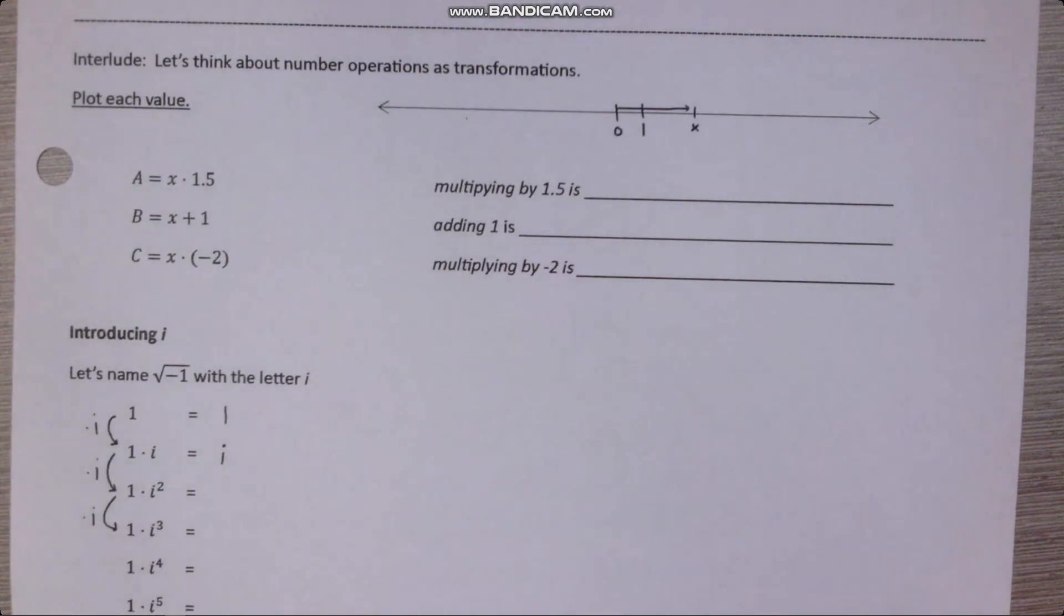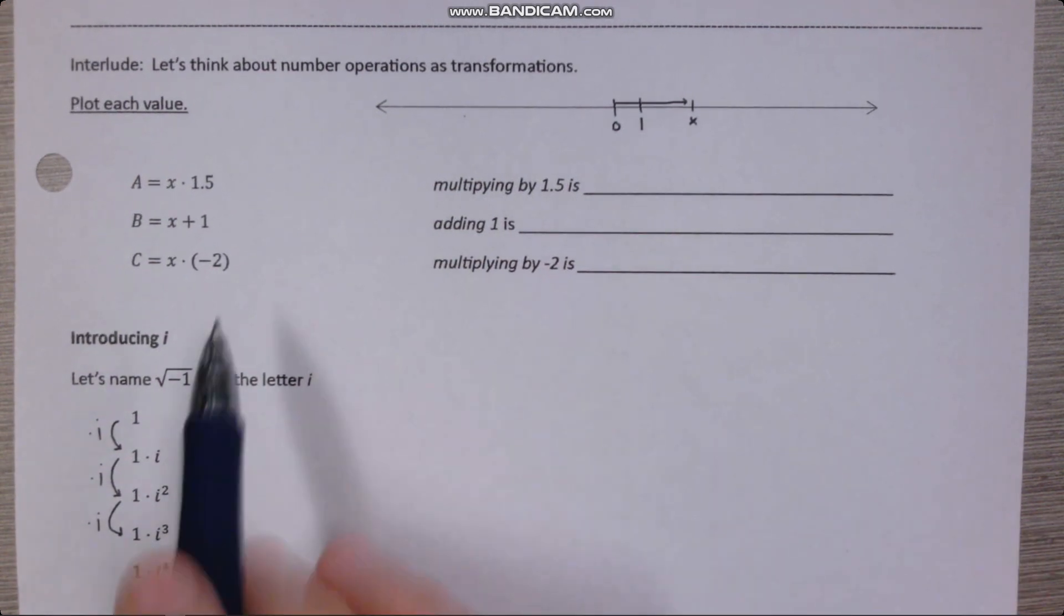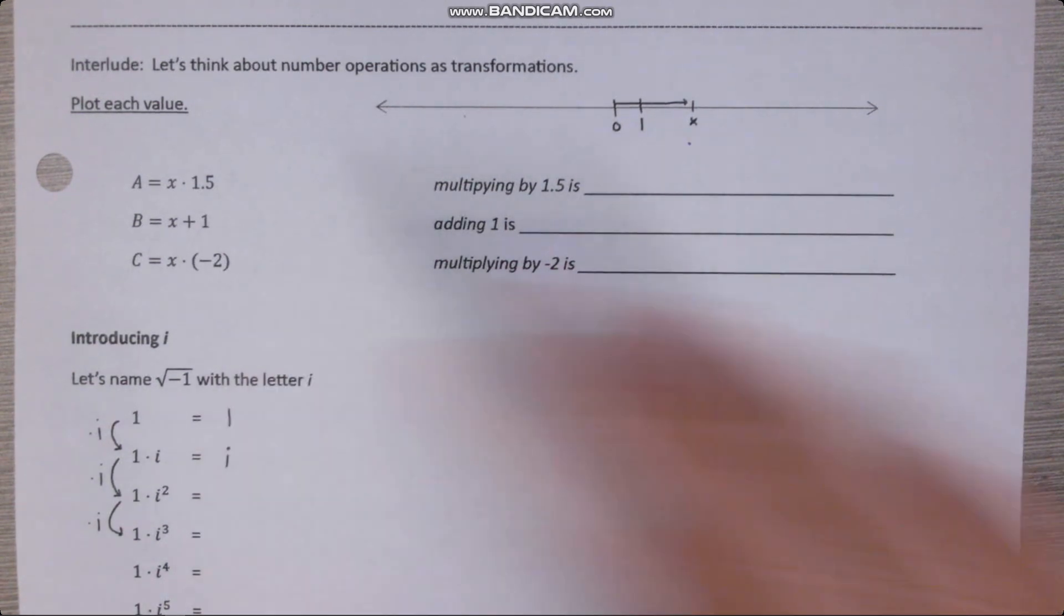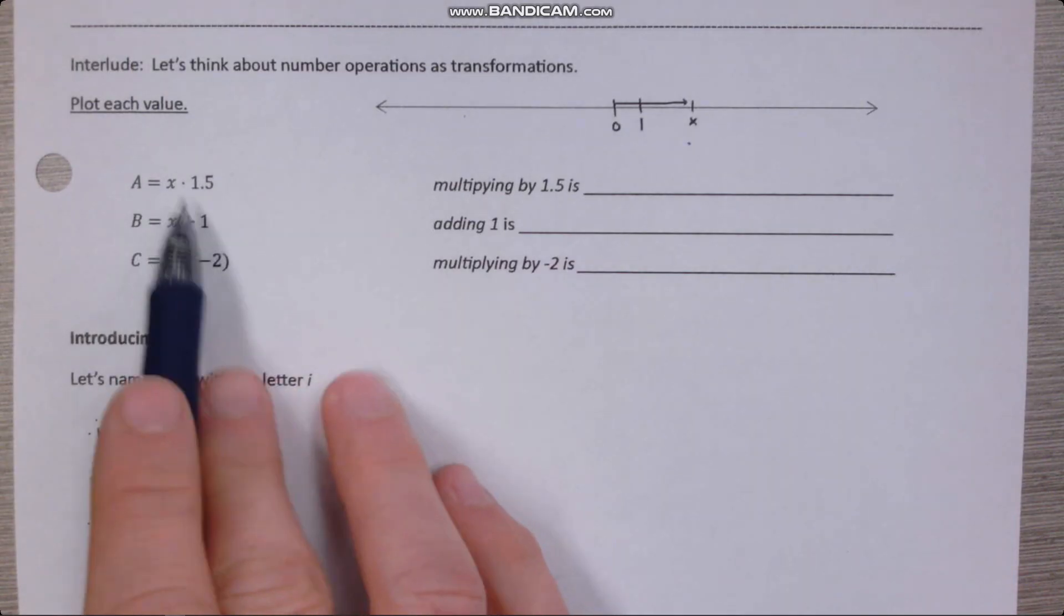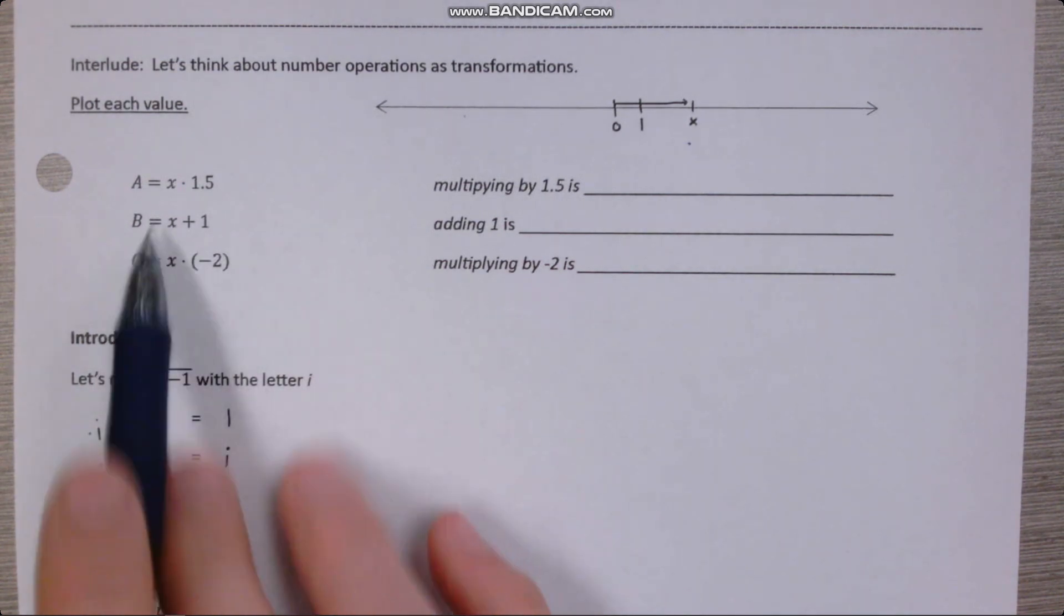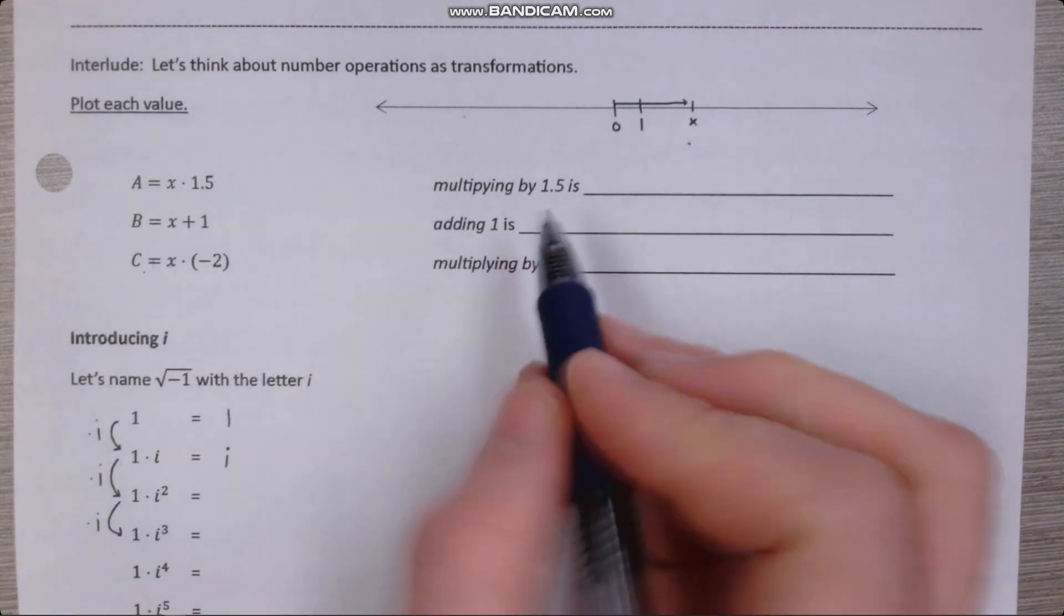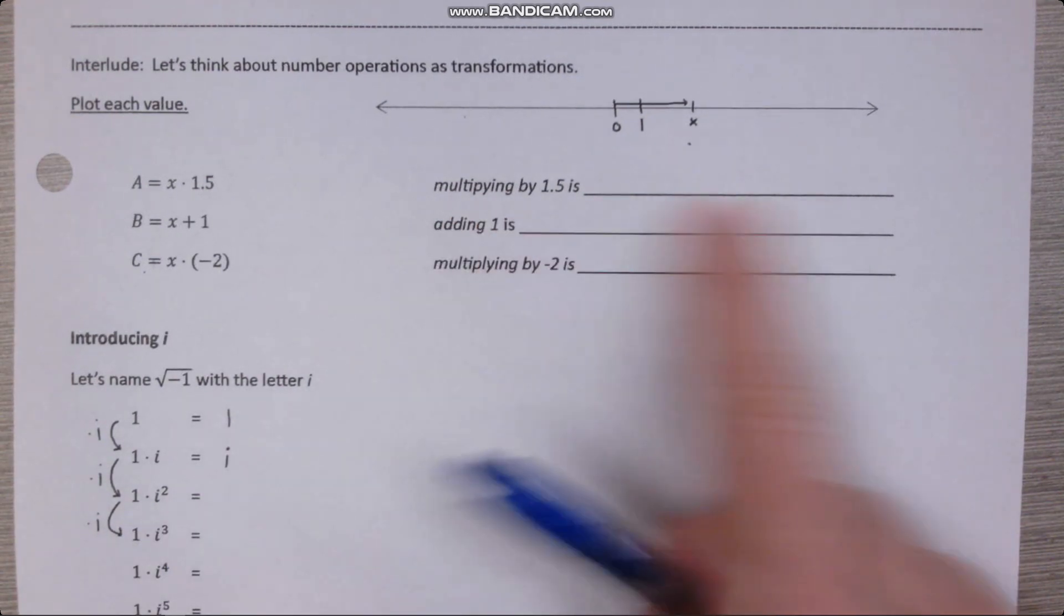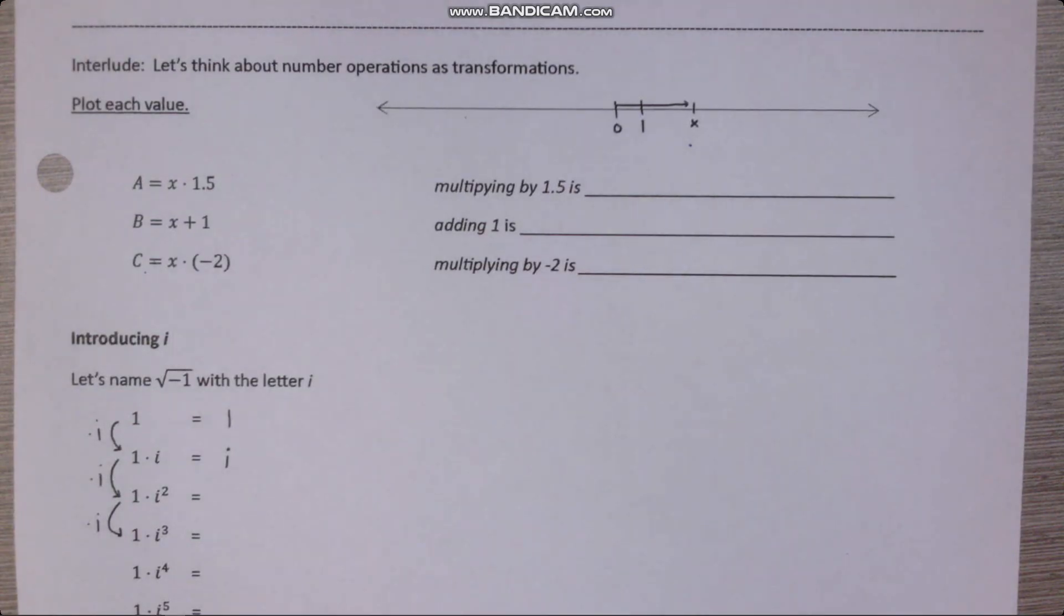Let's just have a quick interlude here for a second and think about numbers as transformations. So let's say I have some positive value x denoted here on the number line, the real number line. So let's imagine the numbers a, b, and c where a is one and a half times x, b is x plus one, and c is x times negative two. Pause the video, go ahead, plot where each of these would be approximately on the real line, and then think about these as transformations. Multiplying x by one and a half is what kind of transformation if you're imagining that x is, say, a vector. So pause the video, give it a try.